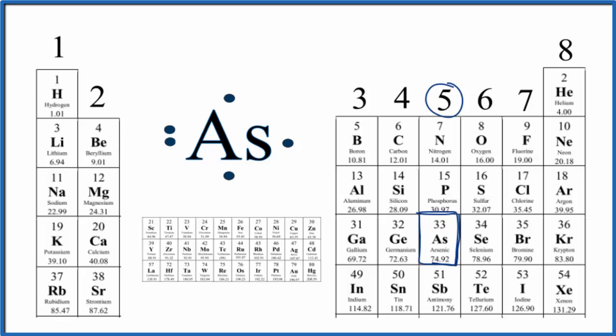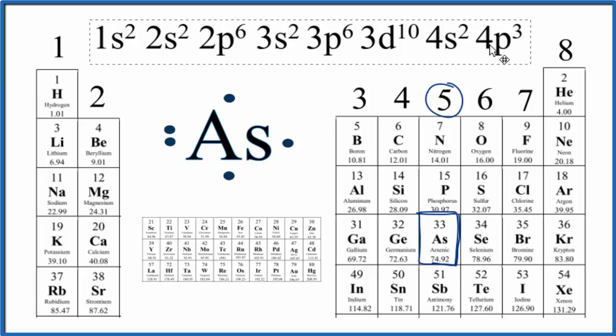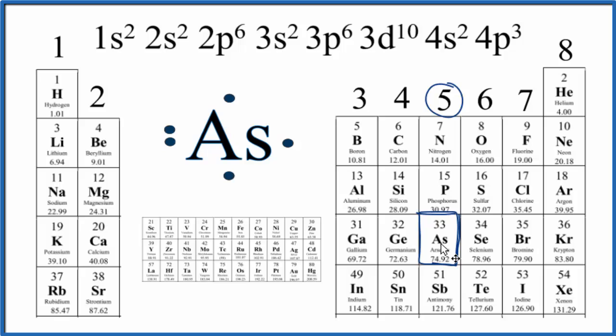We could also look at the electron configuration as well. If we look at the electron configuration here for arsenic, we see 33 is the atomic number. Since it's neutral, 33 electrons all spread out around the nucleus.